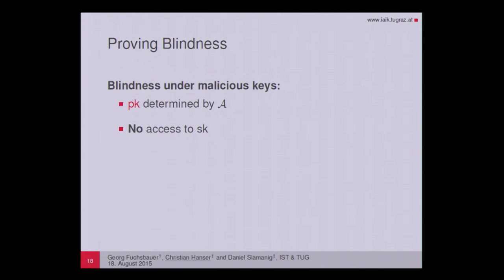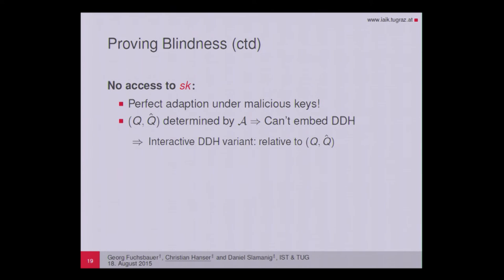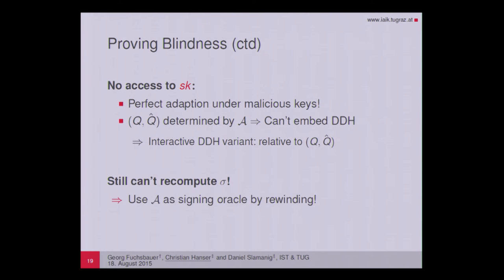In the malicious key model, the public key is fully determined by the adversary and the reduction has no access to the secret key. We must replace perfect adaption by the perfect adaption under malicious keys property. The second problem is that we can no longer embed the DDH instance directly, since Q and Q-hat are fully determined by the adversary and we don't have access to the commitment trapdoor scalar q. We therefore replace the DDH assumption by an interactive variant of DDH relative to Q and Q-hat, and use rewinding of the adversary to simulate the signing oracle.